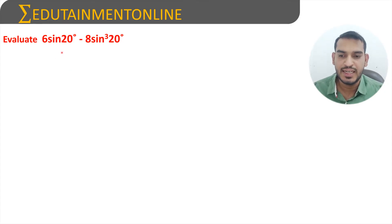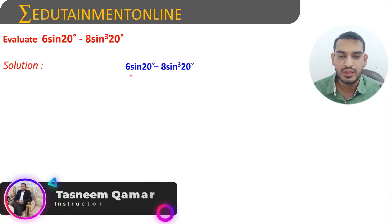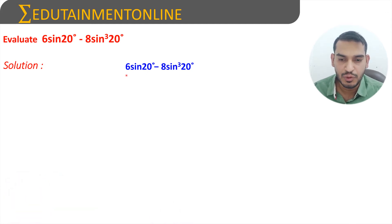Evaluate 6 sine 20 degrees minus 8 sine cube 20 degrees. In the first two terms, which is 6 sine 20 degrees minus 8 sine cube 20 degrees, we have 2 common. If we take 2 common, we can write it as 2 times 3 sine 20 degrees minus 4 sine cube 20 degrees.